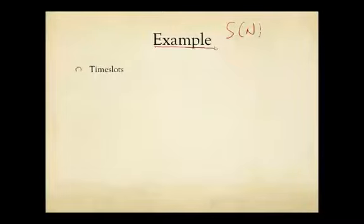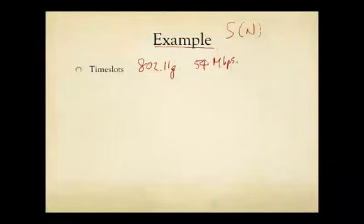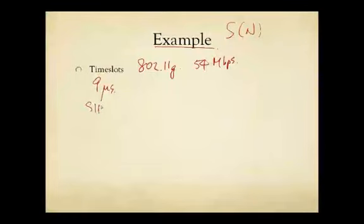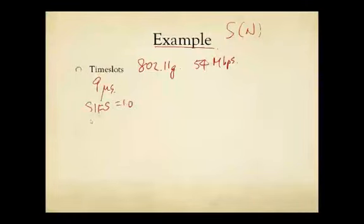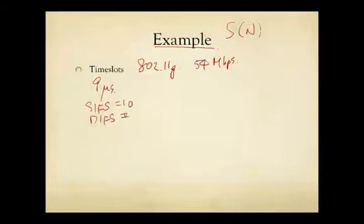Now we're going to walk through a numerical example. First, we'll define the length of time slots. Suppose we're using 802.11G Wi-Fi, which transmits at 54 Mbps, and here are the relevant timing parameters. Each single time slot is 9 microseconds, the SIFS is 10 microseconds, and the DIFS is SIFS plus two time slot units, which is 28 microseconds.